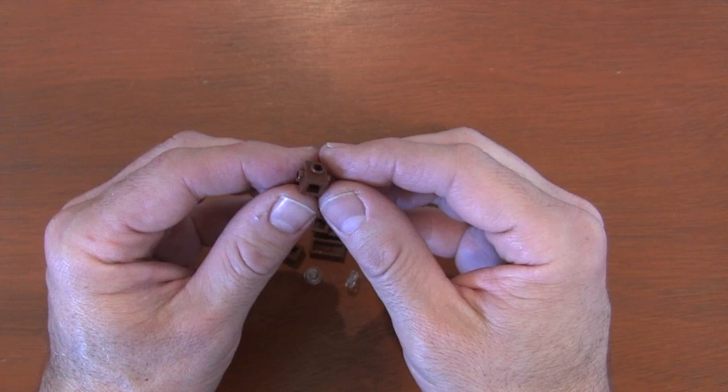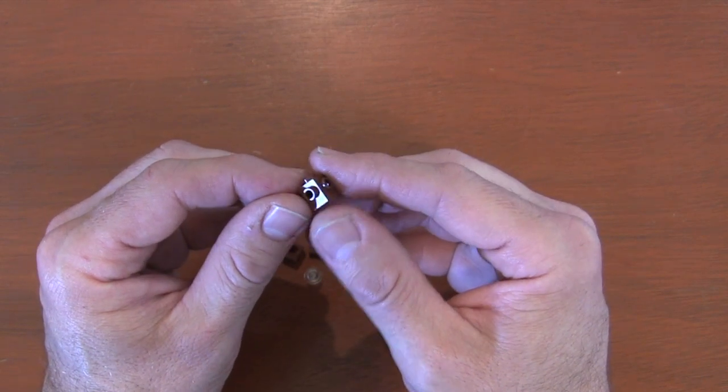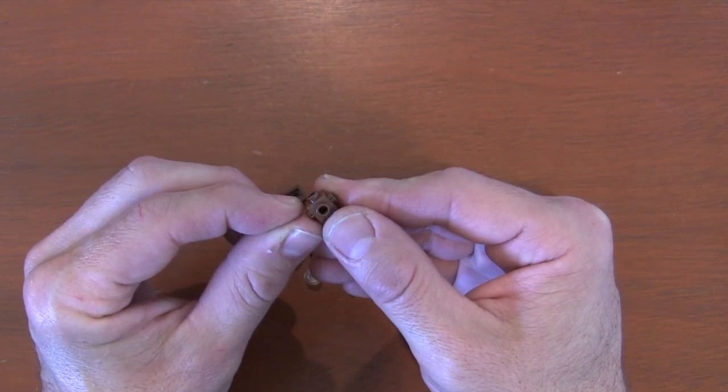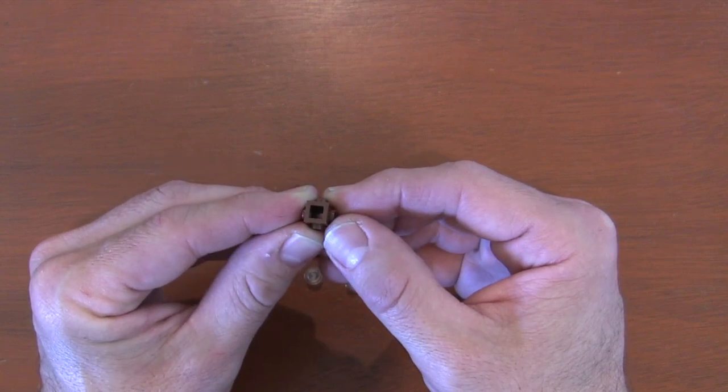We're going to start with this Travis brick, this dark brown, reddish brown Travis brick. The top stud is going to be the front of our Solar Sailor and that big hole is going to be the back.